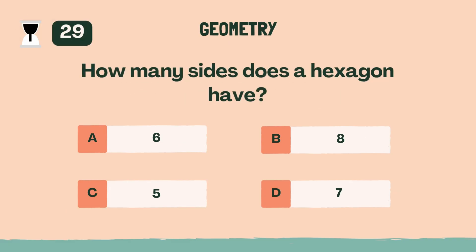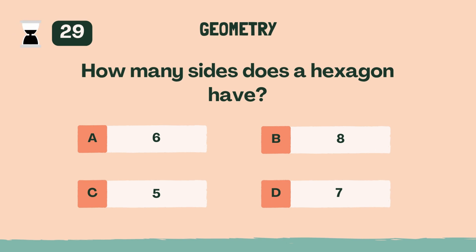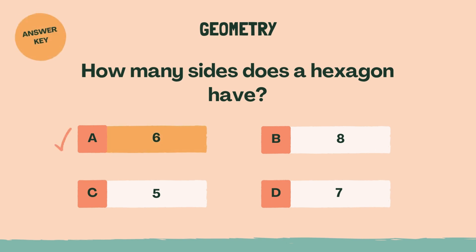How many sides does a hexagon have? A, 6.